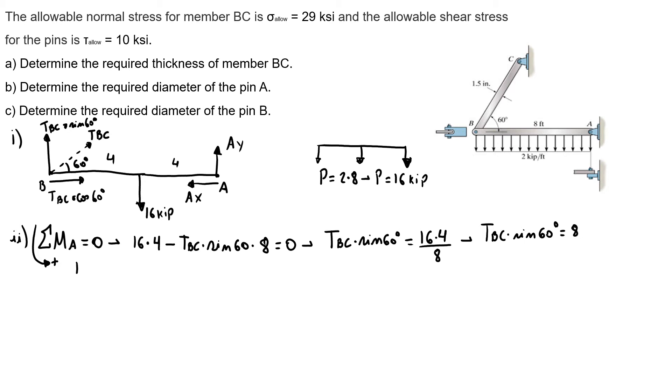Now I know that the sum of forces in x direction equals 0. So I have TBC times cosine of 60 minus AX equals 0. So I know my AX equals 4.62 kip.